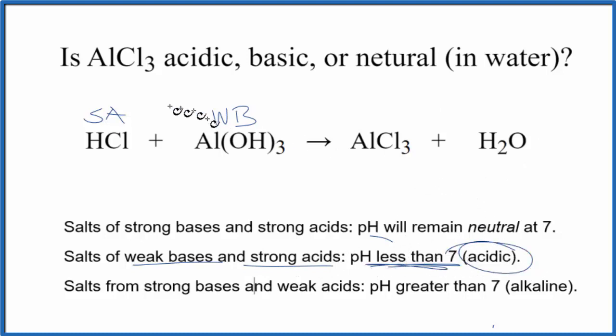This will be acidic. So in answer to our question, when we put aluminum chloride in water, the solution will have a pH of less than 7, it will be acidic.